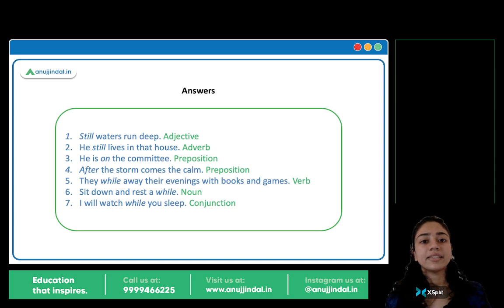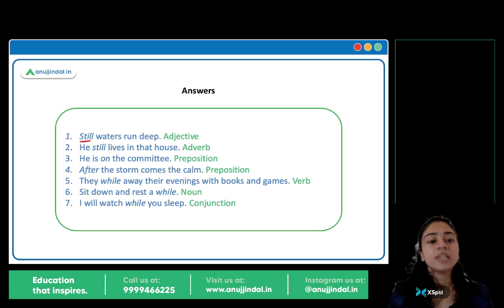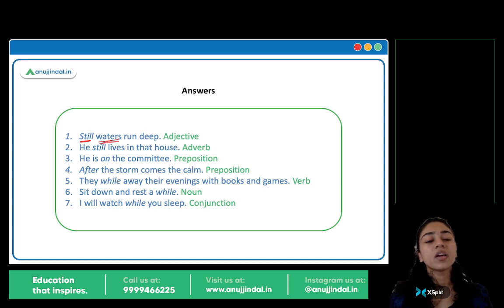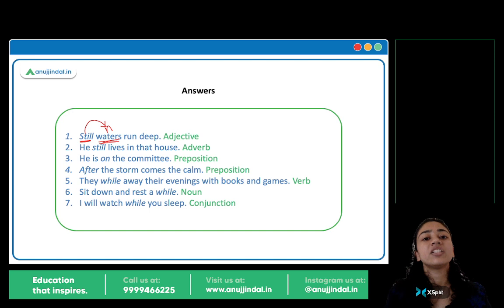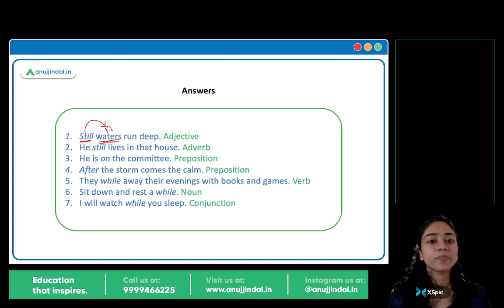So let's see. First sentence mein 'still' — yahaan pe still is an adjective. 'Still waters' — waters is a noun, and still is describing it. Still means stable, shant — it's a quality, so it's an adjective. In the second sentence, 'still' is again there, lekin yahaan pe still is an adverb — because 'lives' is a verb, and still is describing the verb. Still lives — yahaan pe still is an adverb.